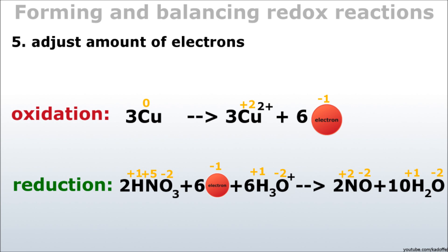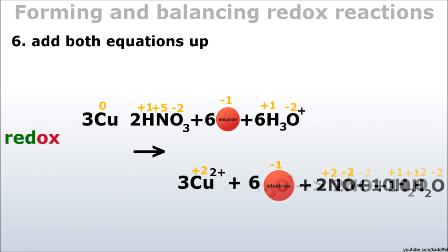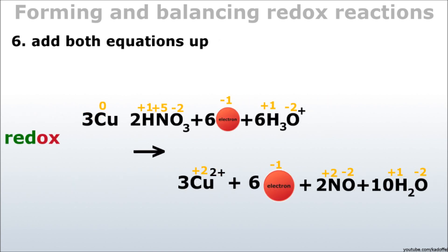Alright, we have now prepared both equations to be united to one redox reaction equation. All we have to do now is add them up. As final step, we can check if we can cancel down anything. In our case, that is only the six electrons on either side.